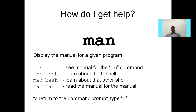The man command — how do I get help? You can get help with the man command. Man displays the manual for a given program, file, or command. For example: man ls shows the manual for the ls command. If you want to learn about the C shell, type man tcsh. That will give the manual for the C shell. If you want to learn about another shell, use man bash. And if you want to read the manual for the man command itself, type man man.